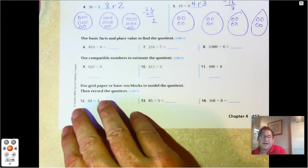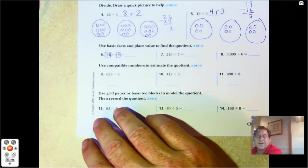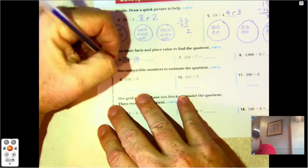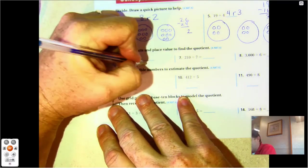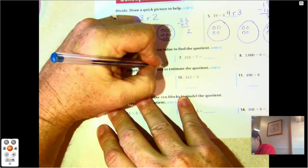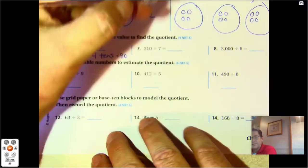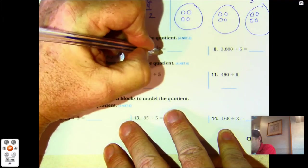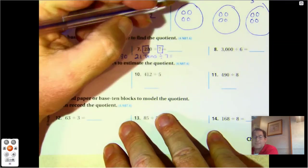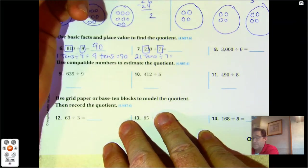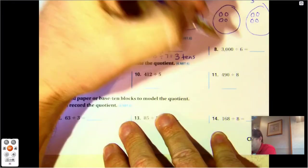Number six, use a basic math fact to find the quotient. 81 divided by nine. We know that's a basic math fact: nine times what is 81? Nine. So we're going to rewrite this as 81 tens divided by nine. 81 divided by nine is nine tens, and nine tens equals 90. Number seven: 210 divided by seven. The basic math fact is 21 divided by seven. 21 tens divided by seven: seven times three is 21. So three tens, and three tens equals 30.